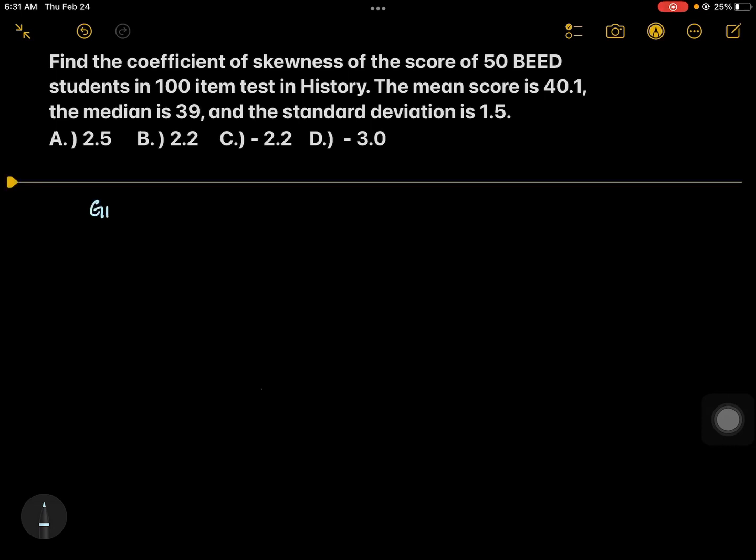we need to identify the given. The mean is 40.1, median is 39, standard deviation is 1.5. The formula in finding the coefficient of skewness is 3 times the quantity of the mean minus the median all over the standard deviation.